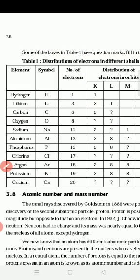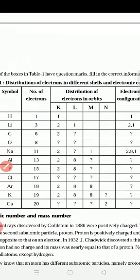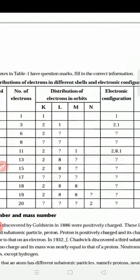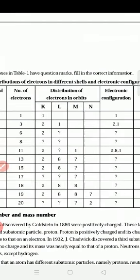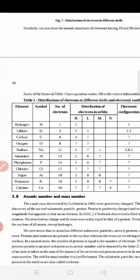Now the electronic configuration. How to write the electronic configuration? Distribution of electrons: K shell how many? Two. L shell how many? One. So we write two comma one. After filling this table, take the photo and send it to me on WhatsApp.